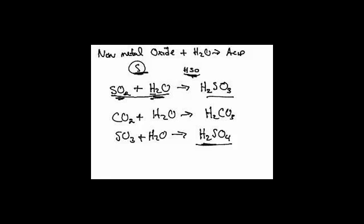In net ionic reactions, you must dissociate all things that are soluble — the solubility rules — and that includes anything that is a strong electrolyte or strong acid. Sulfuric acid is one of the five strong acids. You would not write H2SO4; you would lose credit for that. You would write 2H⁺ plus SO₄²⁻.